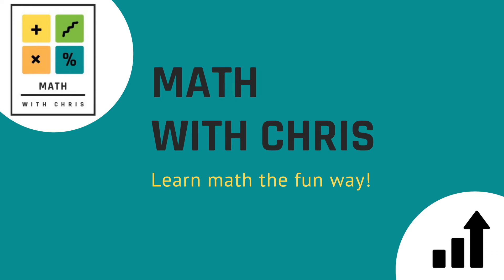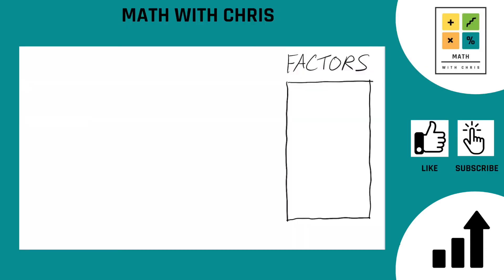How's it going everybody? Math with Chris. Let's take a look at what we're doing today: 70. Let's take a look at the number 70. We've got to find the factors of 70. Let's do it.